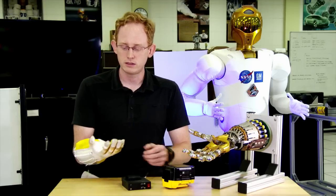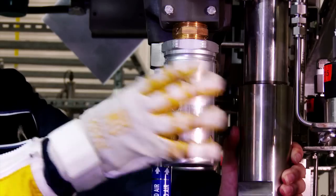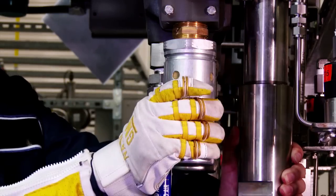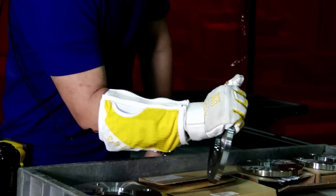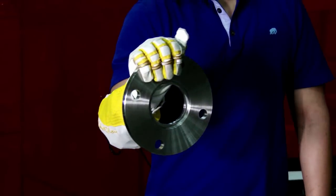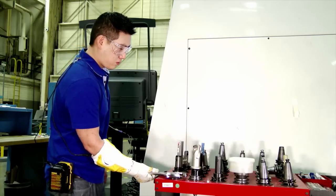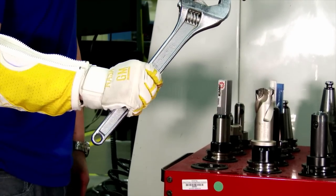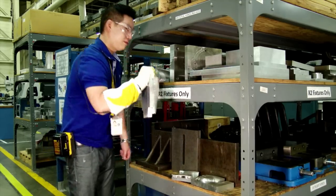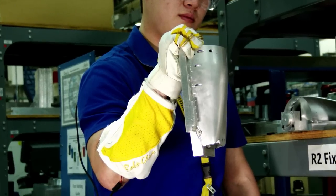The RoboGlove is currently set up in flexure mode, so it holds the hand in closure. Any task that needs to be grasped and held for long periods of time—somebody handling heavy equipment, moving things around, picking objects up, placing them somewhere.